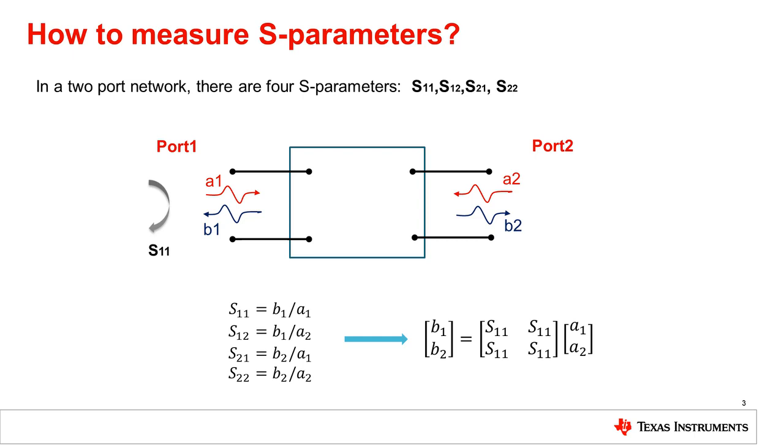S11 is equivalent to the input reflection coefficient. When the input incident wave, A2, is reflected back as B2 at port 2, this is called S22. It can be measured the same way as S11 by terminating port 1 with the characteristic impedance of Z0. S22 is equivalent to the output reflection coefficient.